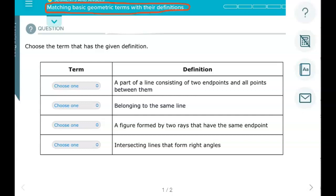This one's a part of a line consisting of two endpoints and all the points in between them. So if I drew that, it would look like this - has an endpoint, two endpoints, and all the points in between them. That is called a line segment, or it may just say segment.